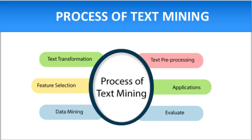Information retrieval is a matter of choosing which document in a collection should be retrieved to fulfill the user's need. Feature selection is a significant part of data mining and can be defined as the process of reducing input or finding the essential information source. Feature selection is also called variable selection.